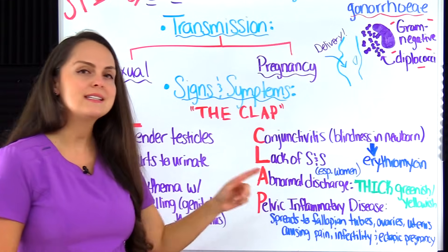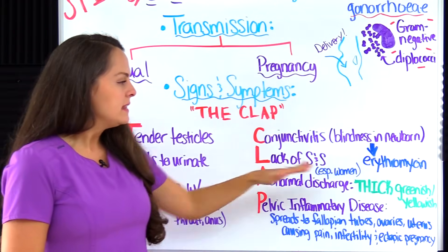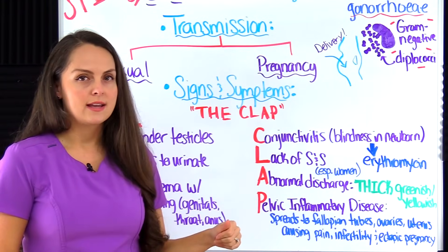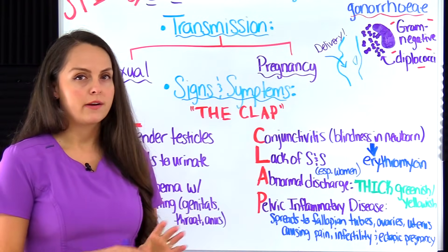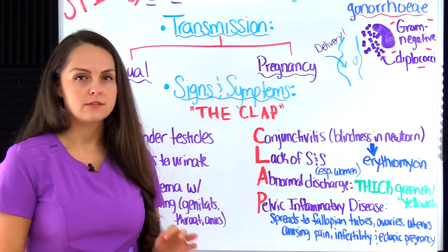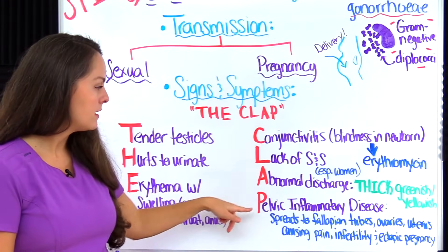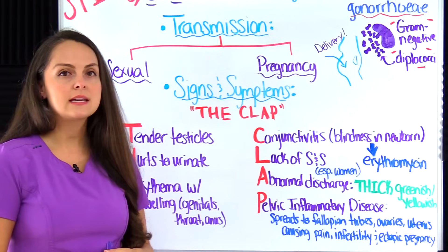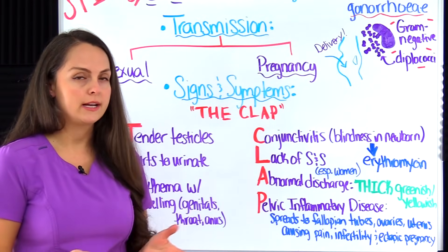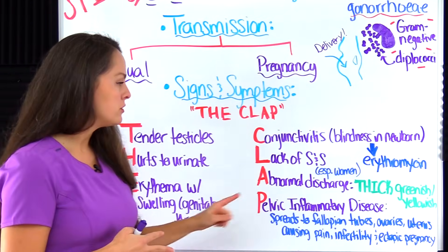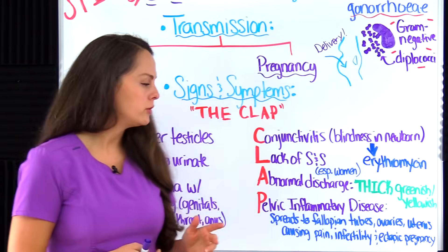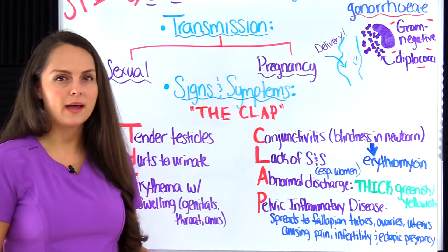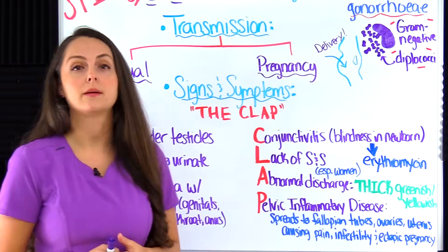A stands for abnormal discharge — another big one. The discharge will be thick, greenish and yellow, occurring on whatever area was affected: the penis, the vagina, or the anus. P stands for pelvic inflammatory disease, PID. This can happen if gonorrhea is not treated and spreads to the fallopian tubes, ovaries, and uterus, causing pain, abdominal pain, infertility, and ectopic pregnancies.